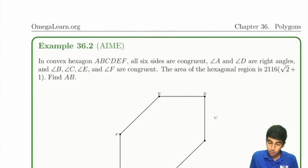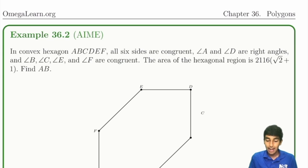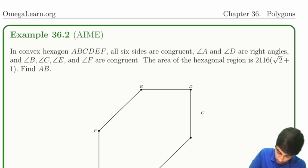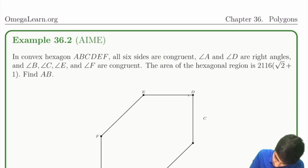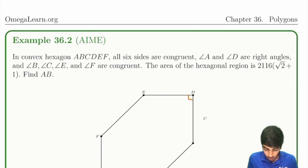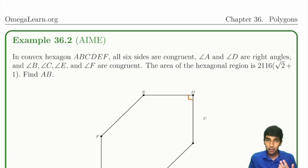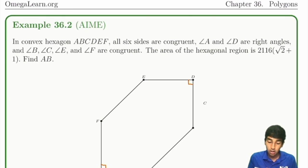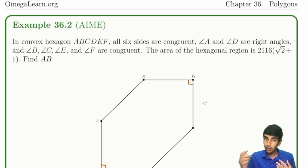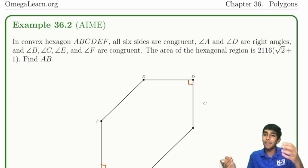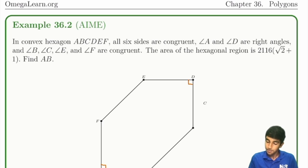Now we'll move on to the next problem. A convex hexagon ABCDEF has all 6 sides equal. Angles A and D are right angles, and angles B, C, E, F are all congruent. We're given the area of the hexagon and asked to find AB — since all sides are congruent, we're really just finding one side length.